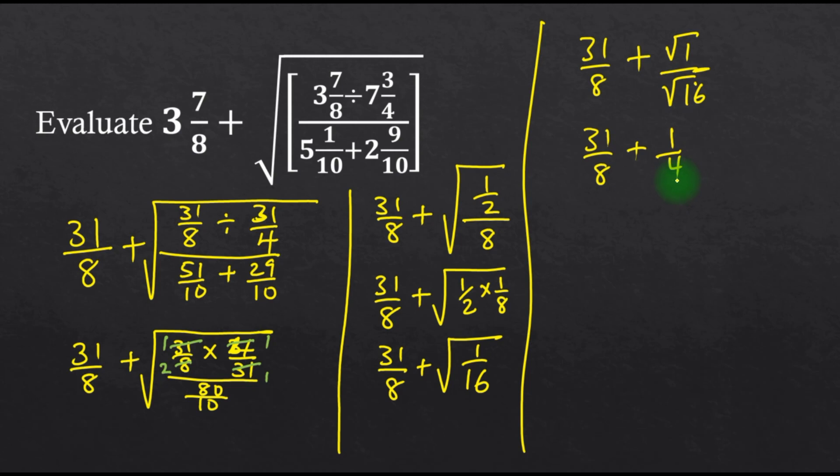I want to make the denominators equal in both improper fractions. So I have to multiply one-quarter through by 2, so I have 31 over 8 plus...